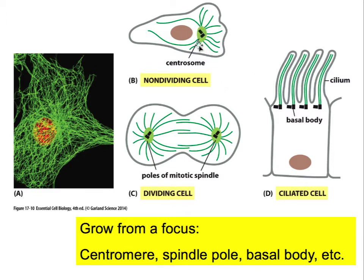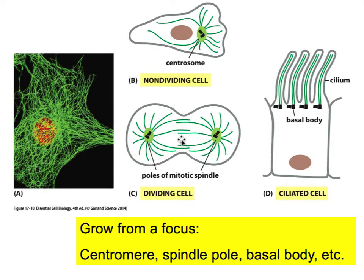In non-dividing cells, microtubules originate from a structure called a centrosome — one per cell. They have a minus end attached to the centrosome and a plus end that goes off exploring the cell. In a dividing cell, the centrosome is duplicated to produce two centrosomes, which then work together to position the chromosomes and separate the two daughter cells.